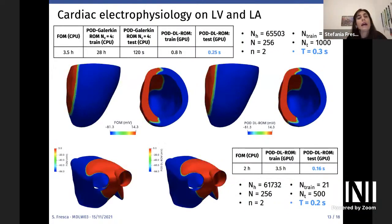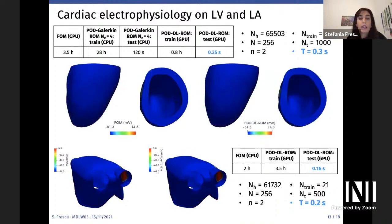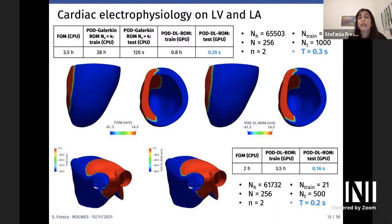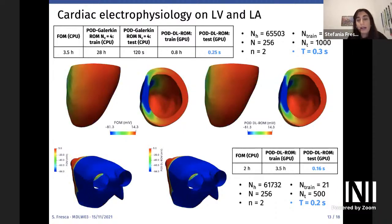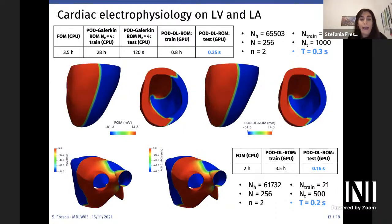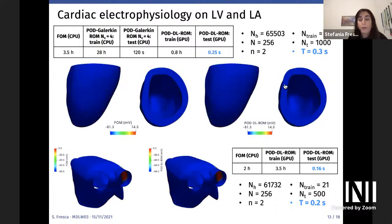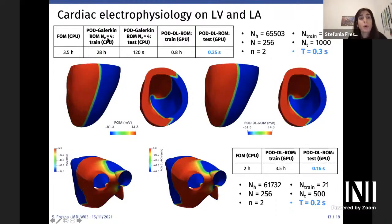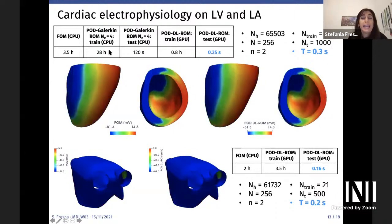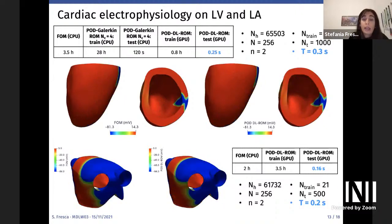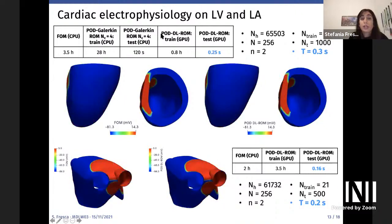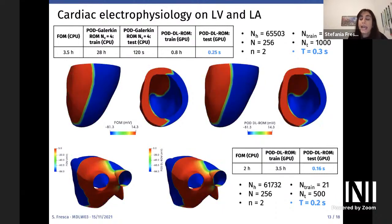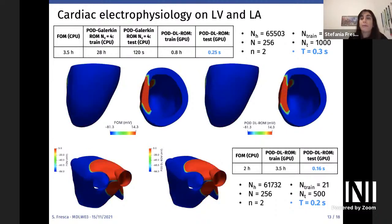Returning to cardiac electrophysiology with realistic geometries — a left ventricle and a left atrium — with longitudinal conductivity as parameter, a traditional local POD-Galerkin ROM with four clusters requires 28 hours of training, whereas the POD-DL-ROM trains in less than one hour. On both the LV and LA geometries, we achieve real-time solutions at testing time.